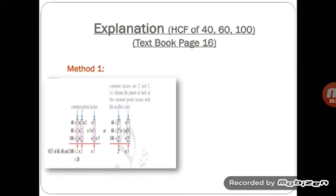Now move to the next page. Here is an example of the HCF of three numbers: 40, 60, and 100. First we understand it according to method one. The given three numbers are expressed as a product of their prime factors, then common prime factors are taken out. The common prime factors are 2 × 2 × 5, whose product is equal to 20, which is the HCF of the given three numbers. On the right side, prime factors are written with index notation and common prime factors with the smallest index notation, giving the same product of 20.